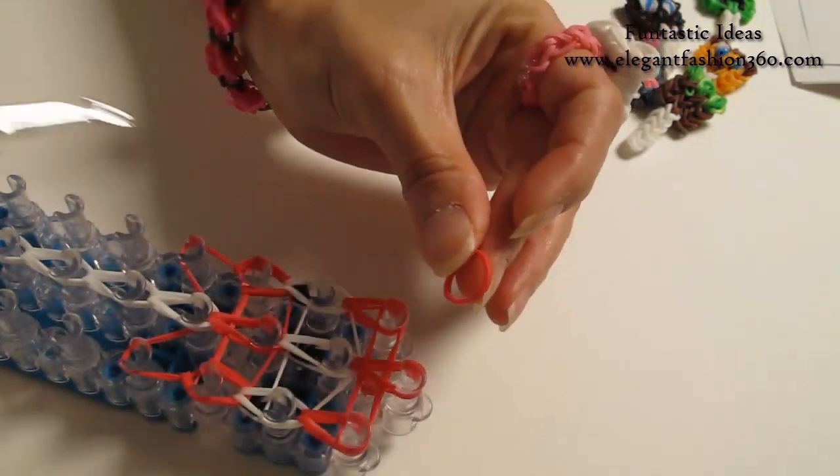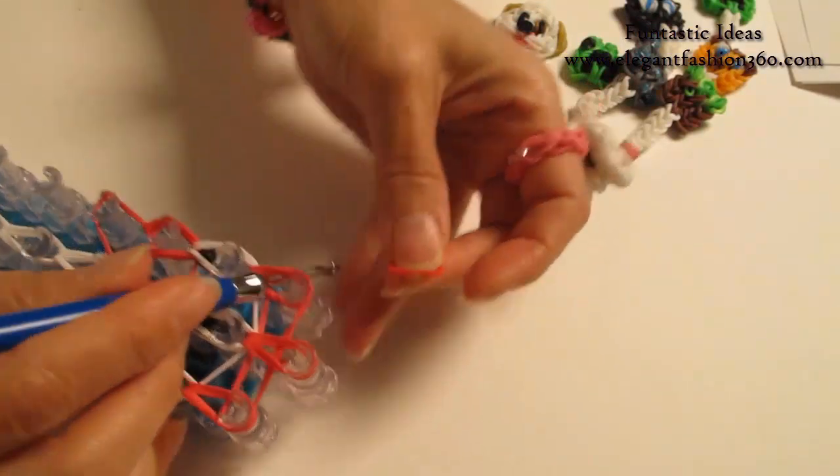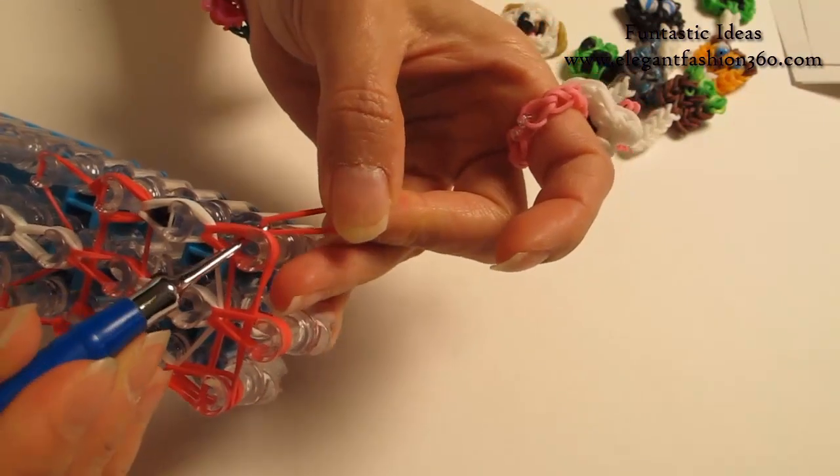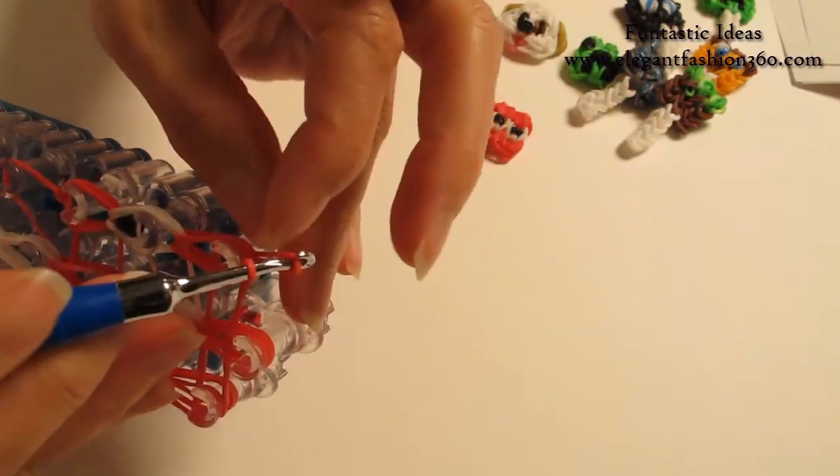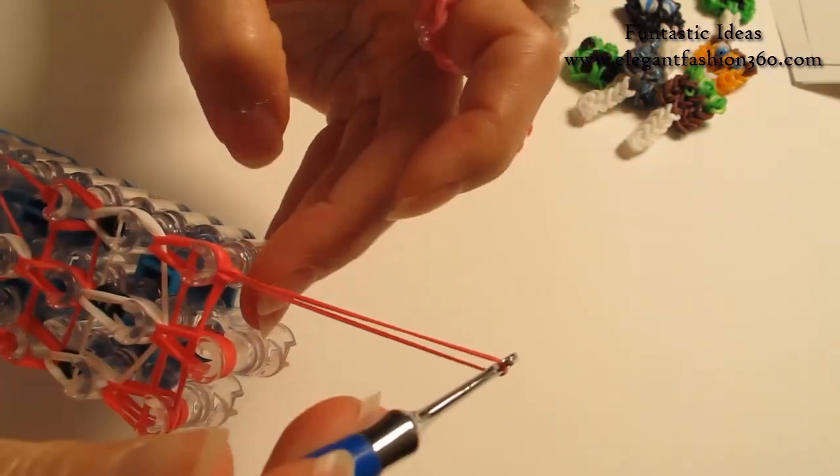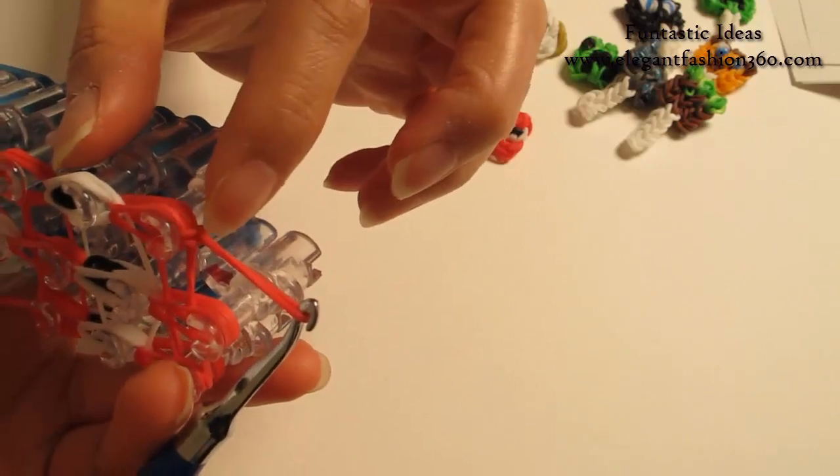Now we're going to take 1 single band, place right here, bring it through. Put both ends on your hook, grab one end through the other, and pull it to tie a knot here.